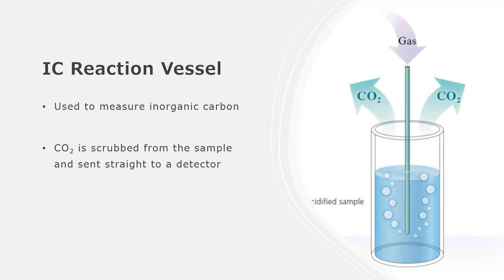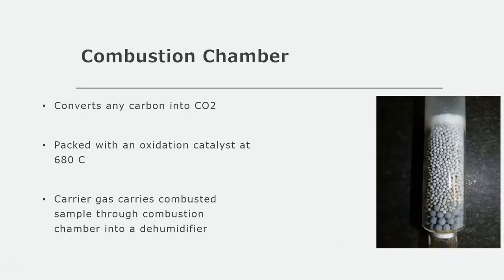Next up in the flow path comes the inorganic carbon or IC reaction vessel and the combustion chamber. The sample is sent to one or the other based on what you're trying to measure. In the IC reaction vessel, an acidified sample with gas will cause inorganic carbon to be purged as carbon dioxide, and this CO2 can then be measured by the detector. Once your sample has been properly diluted, acidified, and maybe sparged or measured for inorganic carbon, it will be injected into the combustion chamber. The combustion chamber is packed with an oxidation catalyst and it reaches a temperature of 680 degrees Celsius, and the carrier gas will carry your combusted sample through this chamber onto the next steps.